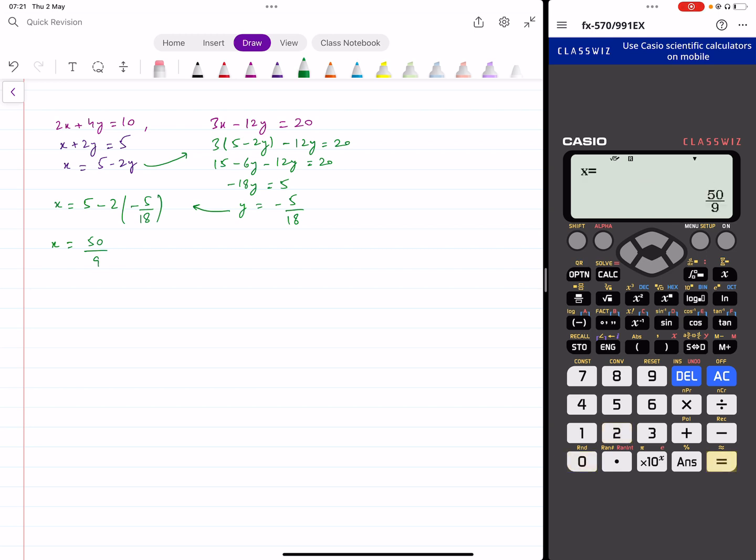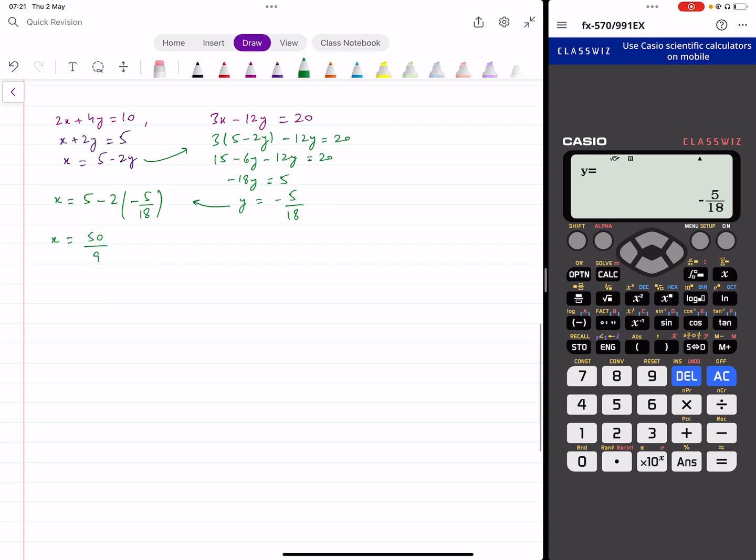Now, when I press the equal button here, that gives me the value of x. That's 50 over 9. And then press the equal button again. That gives you the value of y, which is minus 5 over 18. Again, showing the working when you're solving these equations is necessary. You can just use this for verification. All right.